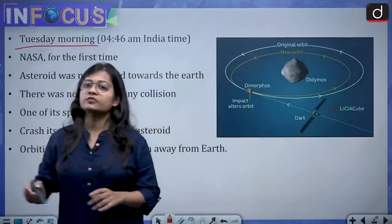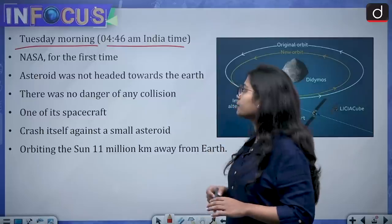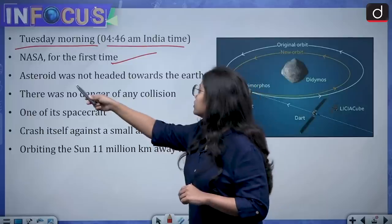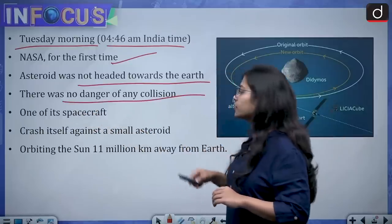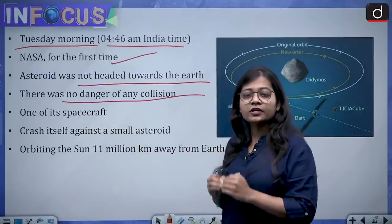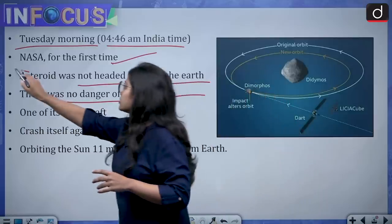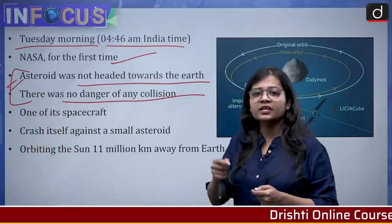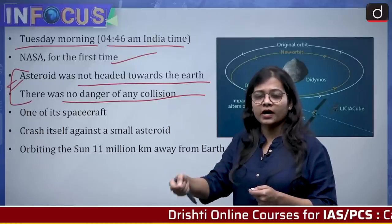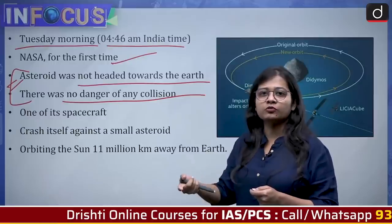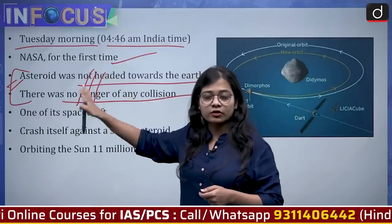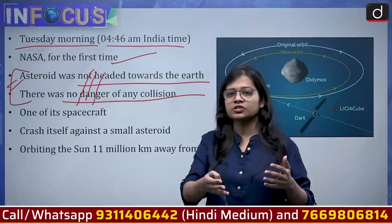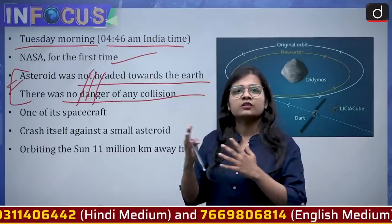On Tuesday morning at 4:46 a.m. Indian time, NASA for the very first time conducted this mission. The asteroid was not headed towards Earth and there was no danger of any collision. But just to see that if in future a situation arises where an asteroid is coming towards Earth, whether we will be able to tackle it — to test that capability — NASA carried out this mission.